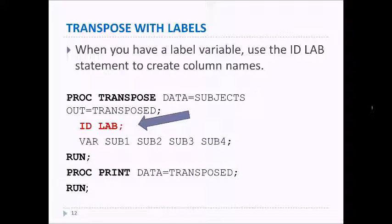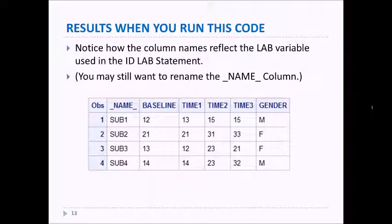What that's going to do is cause that LAB variable to be used as the ID when the data are flipped. So let's take a look at the result of this code, and you'll notice here that we have baseline, time one through gender, just as we want. Now the NAME column isn't exactly what we want, but we could use the RENAME command to rename that and get it the way we want it.